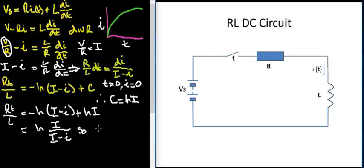So at this point I can now say if I use my logs, I have E to the minus RT over L equals big I over big I minus little i. Don't forget what I'm trying to do is get little i. So if I write little i, that equals big I times one minus E to the minus RT over L.